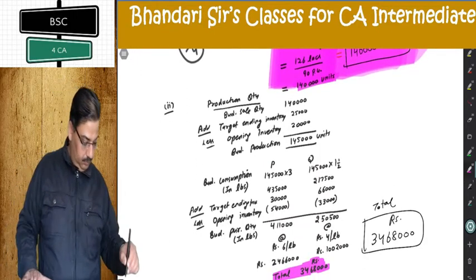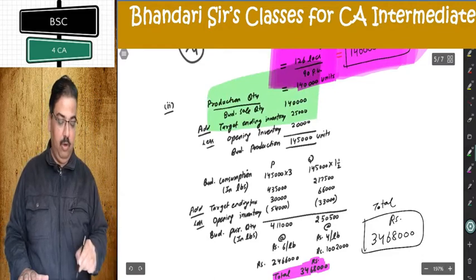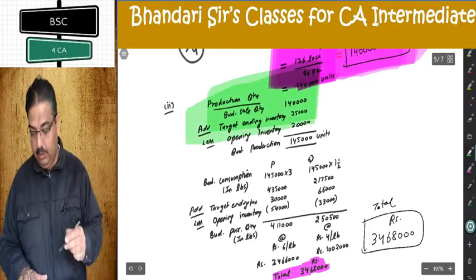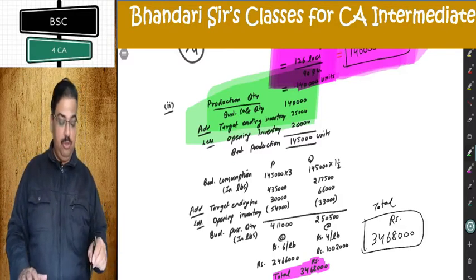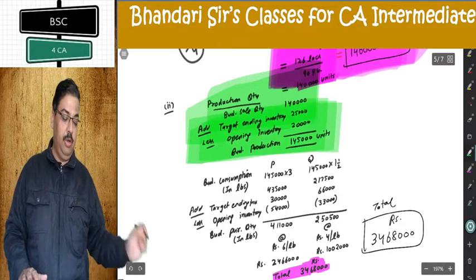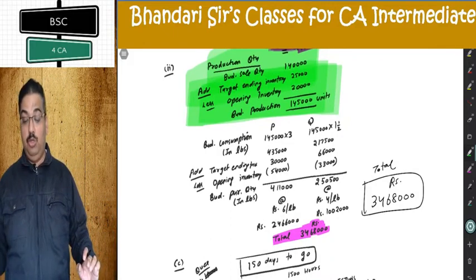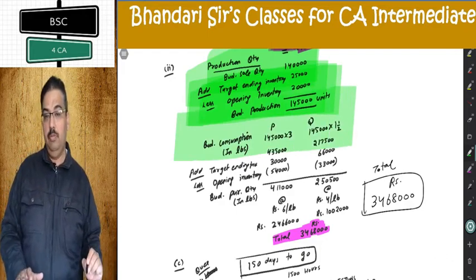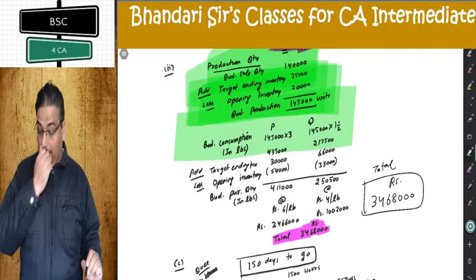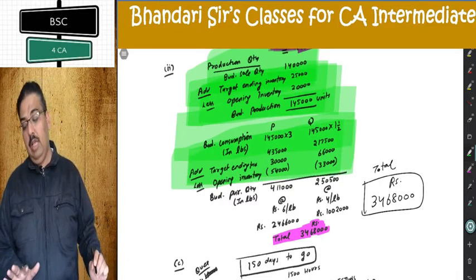Budgeted sale quantity: 1,40,000. Add closing stock: 25,000. Closing and opening stocks are given at the bottom of the table — finished goods, P and Q. I am getting budgeted production of 1,45,000 units. Then I apply input-output ratio from the second and third lines of the question: 3 LBS and 1.5 LBS applied on production units. I get consumption in LBS for P and Q.